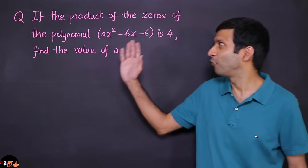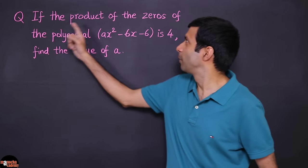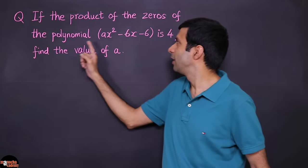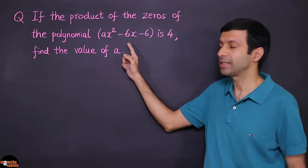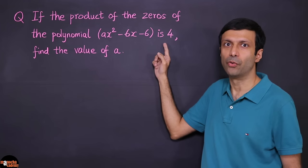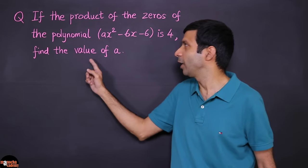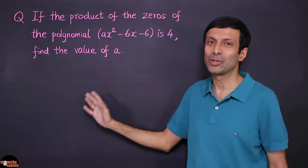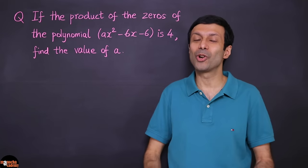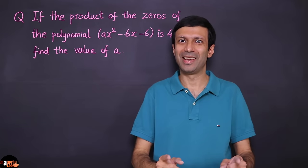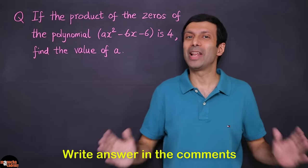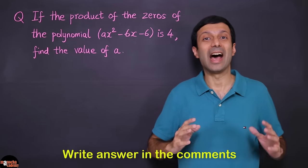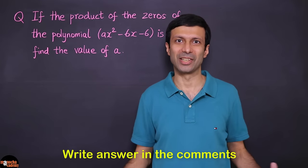Here's our final question: if the product of the zeros of the polynomial Ax² - 6x - 6 is 4, find the value of A. I'm not going to solve this — I want you to try it yourself. Do let me know your answer by putting it in the comments below. I look forward to reading your answers.